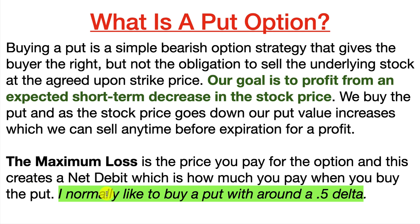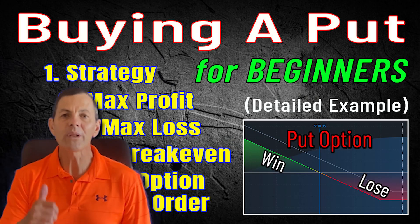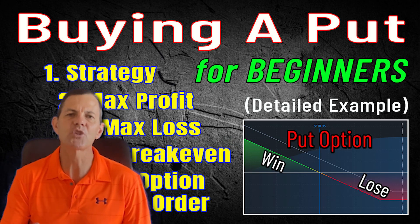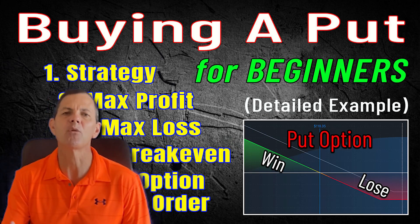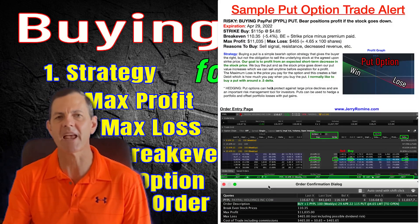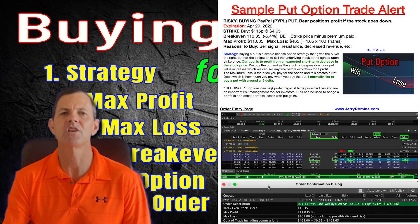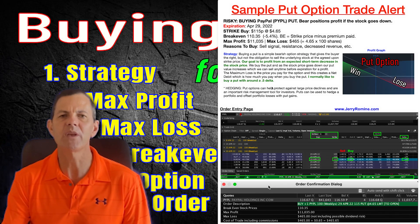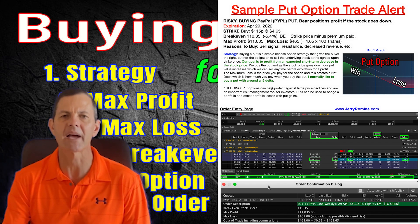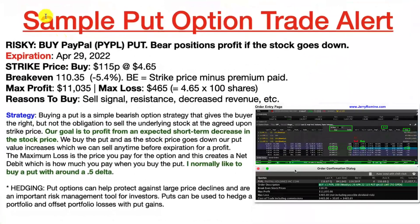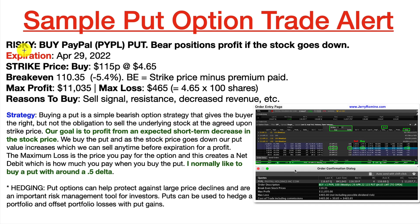I normally like to buy a put with around a 0.5 delta and you'll see that in just a minute. We learn best by doing so let's walk through a detailed example and we'll start with a sample Discord trade alert which gives us all of the information to buy a put option. Let's assume that we expect PayPal to go down in value and we want to buy a put. Here's our sample put option trade alert.